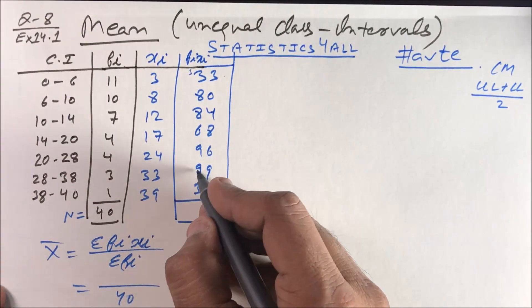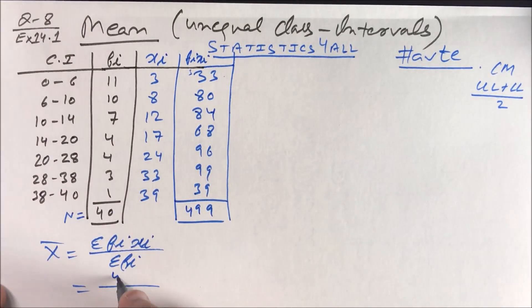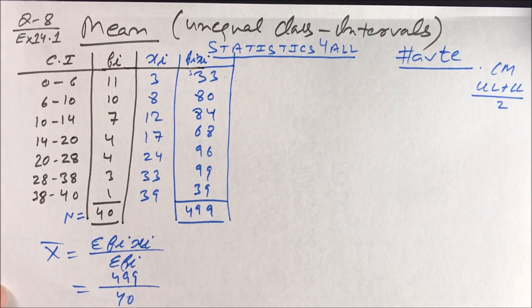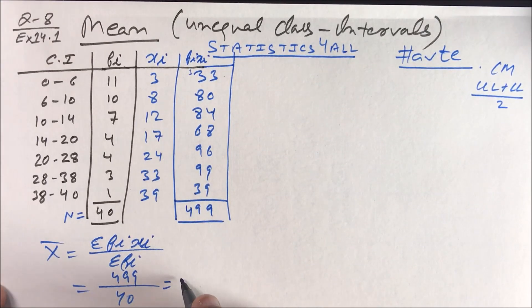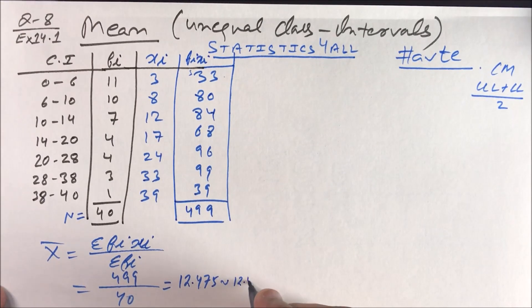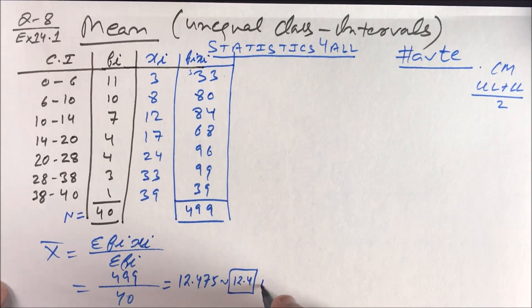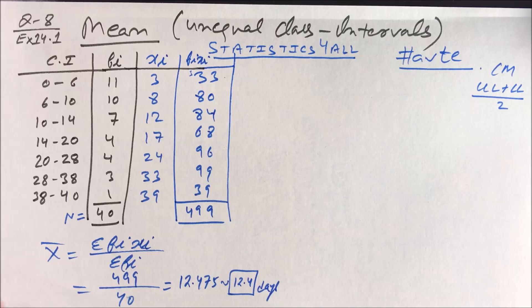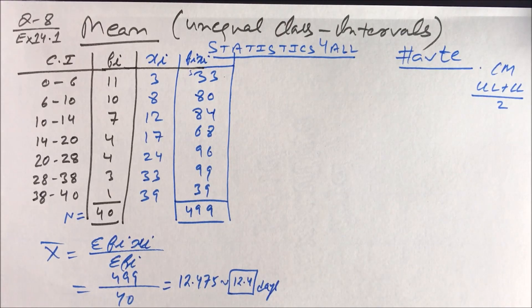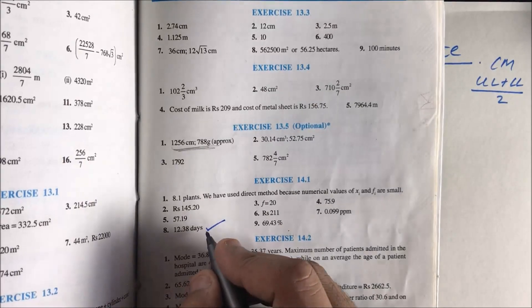So guys, this is 499. 499 upon 40 is 12.475. It means your approximate answer is 12.4. The question is related to number of days, so 12.4 days. In my NCERT, the answer is 12.38 days, which is wrong.